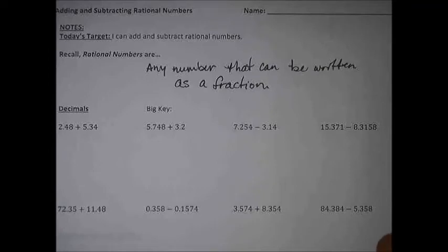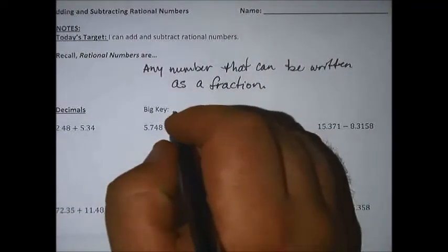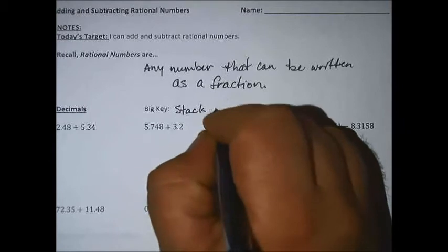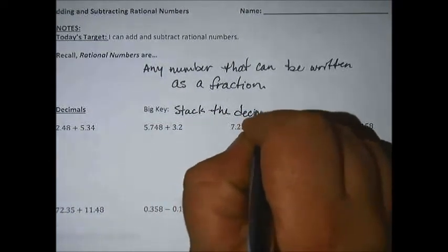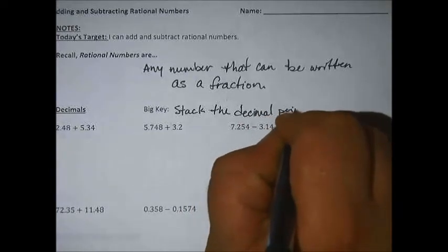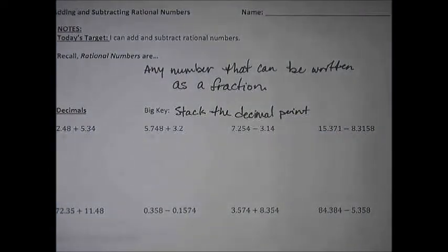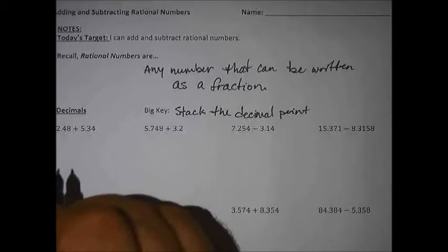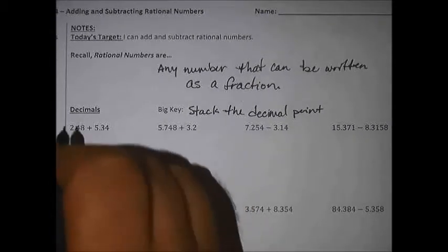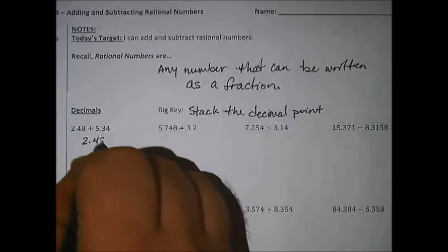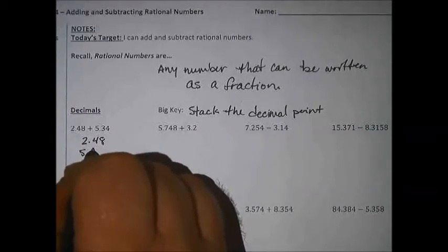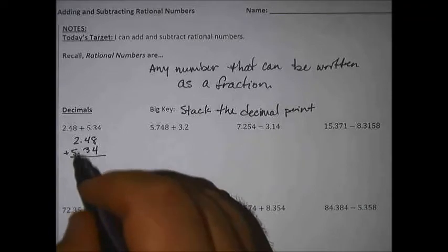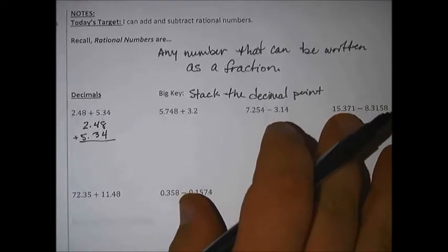To start, we're going to work with decimals. With decimals, the big key here is that we want to stack the decimal point. If we're going to use our vertical layout method — that's kind of the number one way that we will add and subtract decimals by hand — we're going to stack that decimal point and then add it up. Make sure the decimal point is over the other decimal point and then you can just add them straight down.